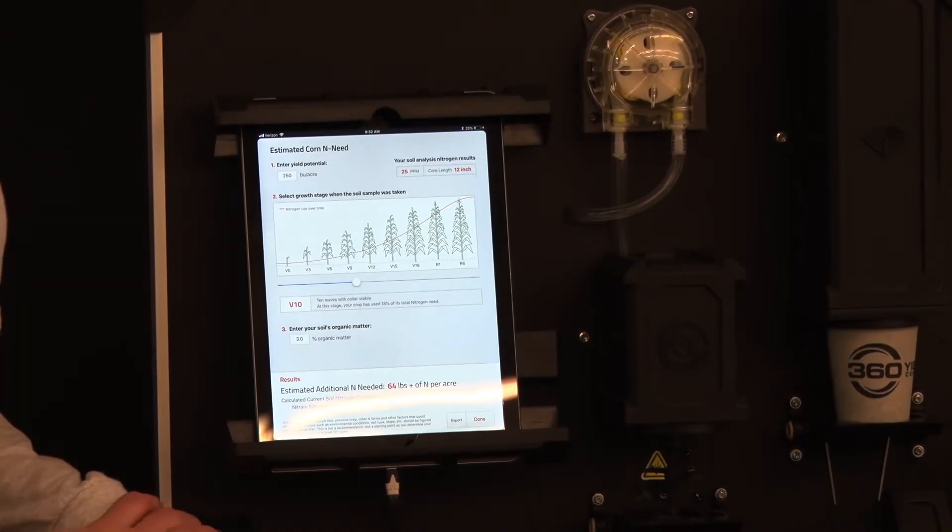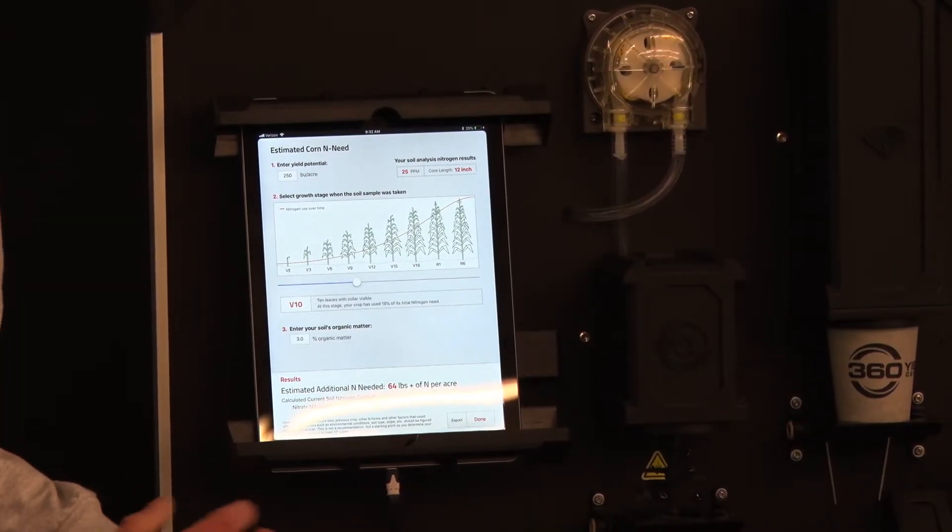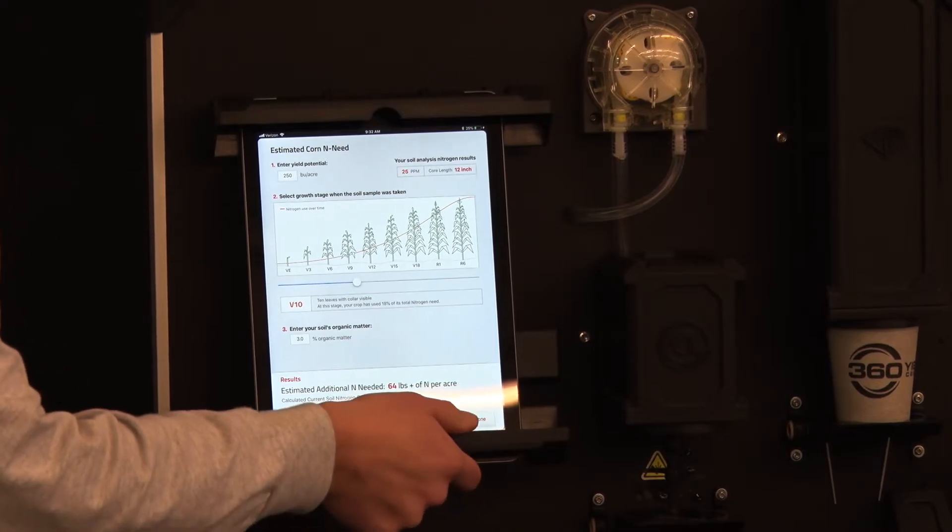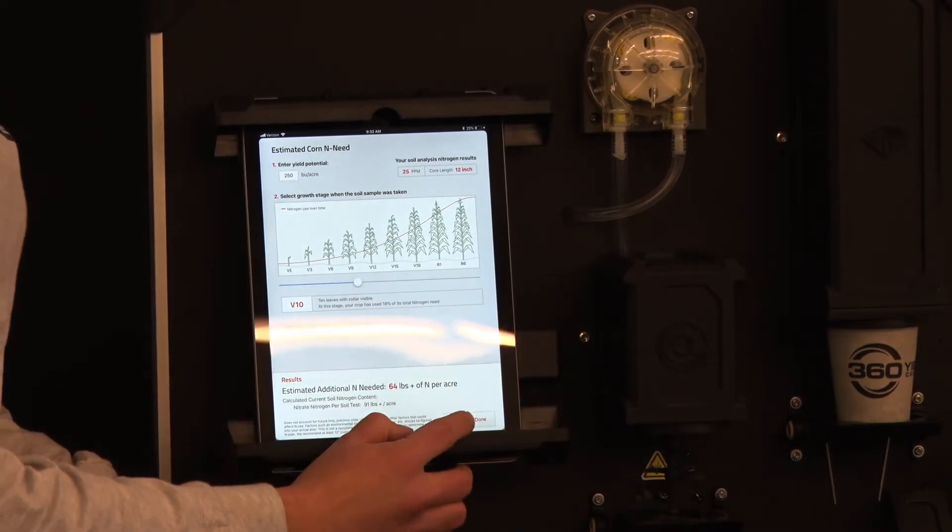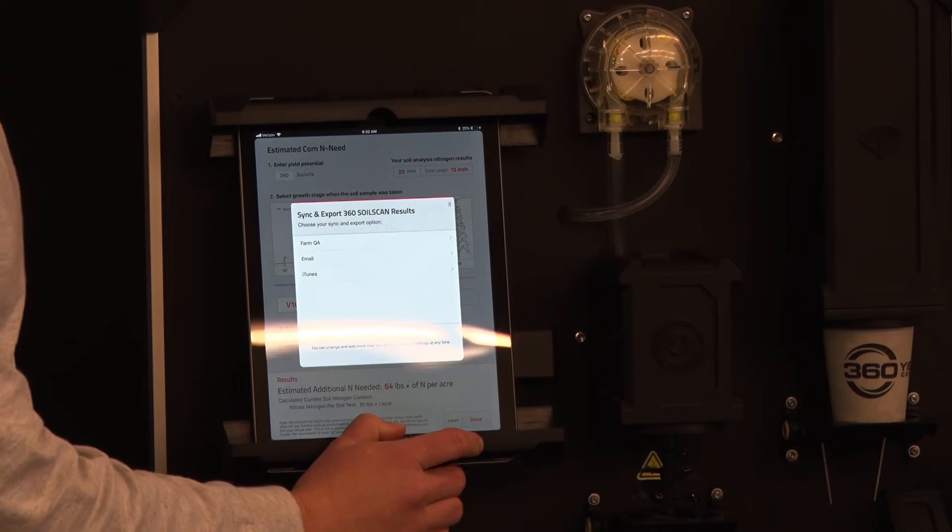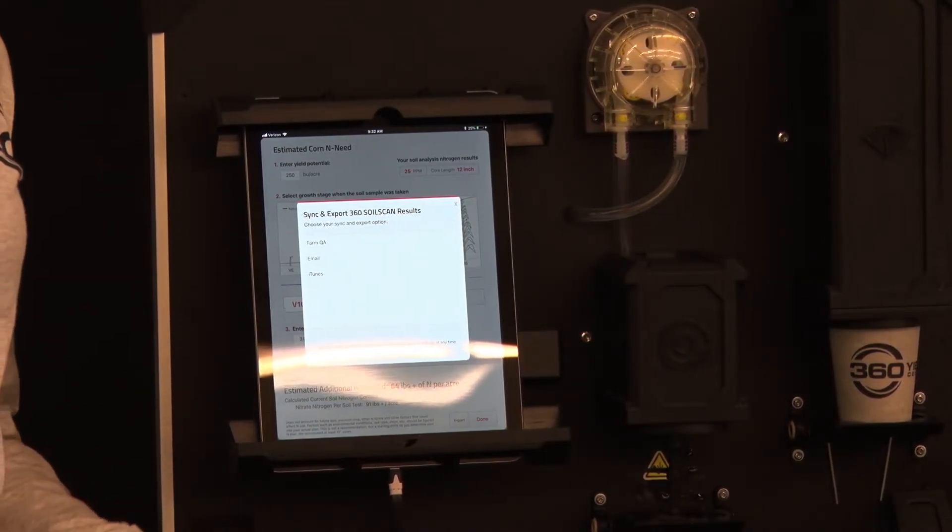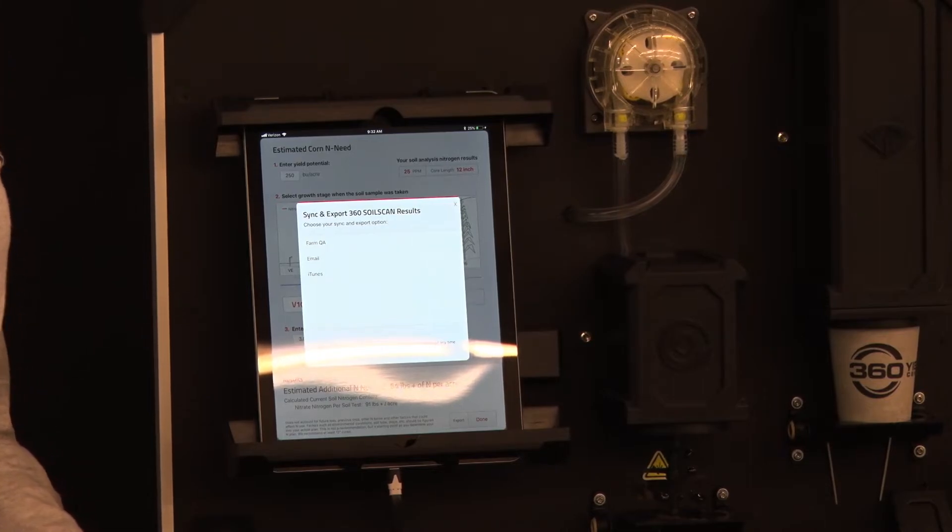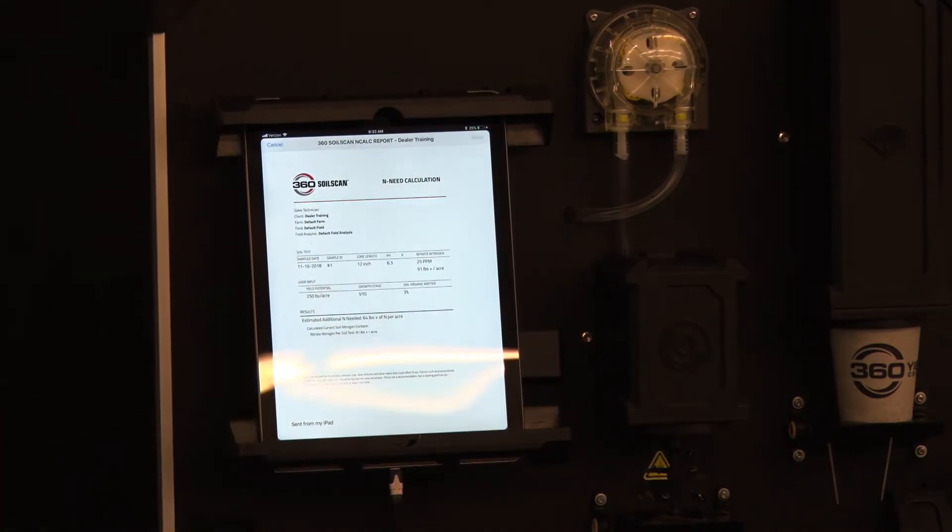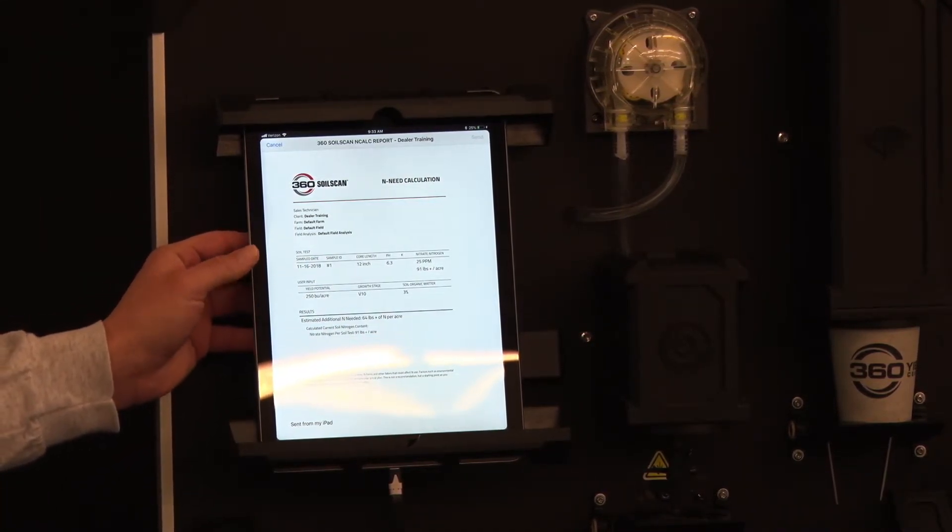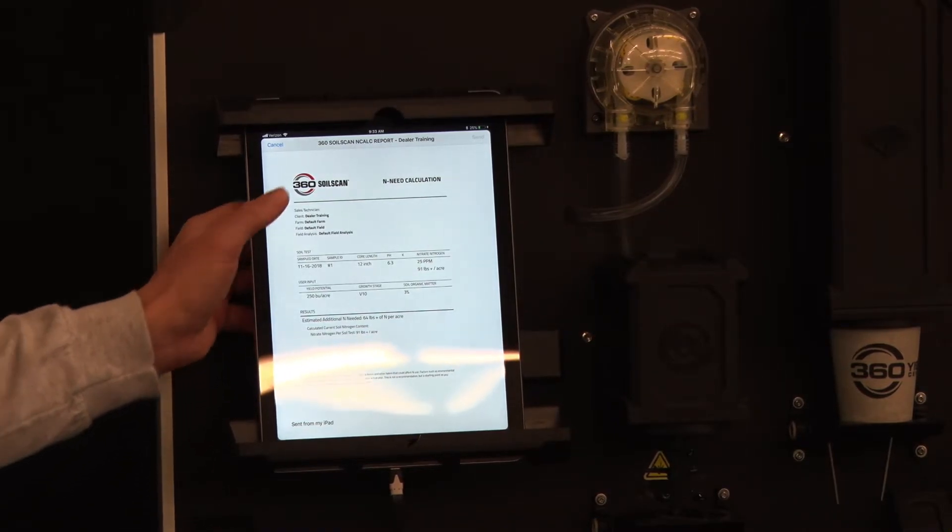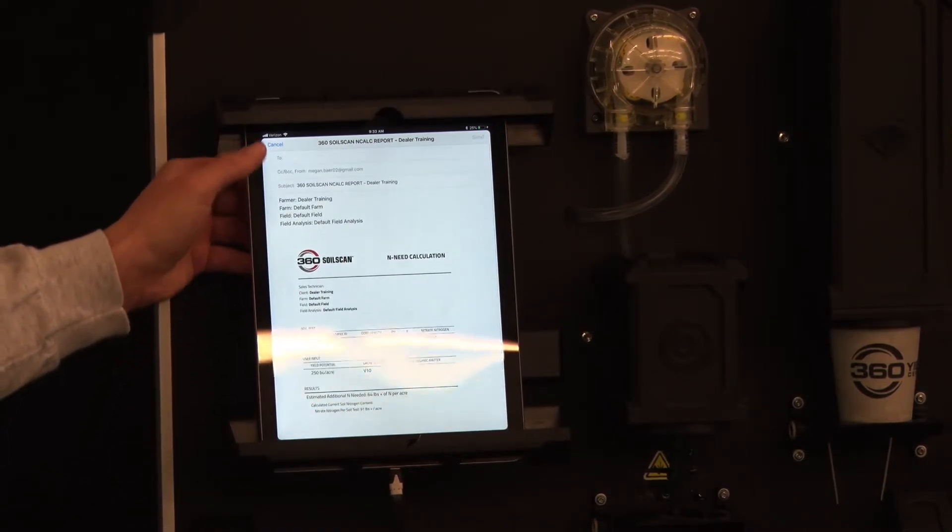Once you have calculated the estimate n needed you can export your results or select done and it will save them. To export you'll select the export button and can email the results to yourself. It's important to note that you need to have emails set up on your iPad for this function to work. The export will show your sample taken and the estimated n needed and then you're able to email it to whoever you'd like.